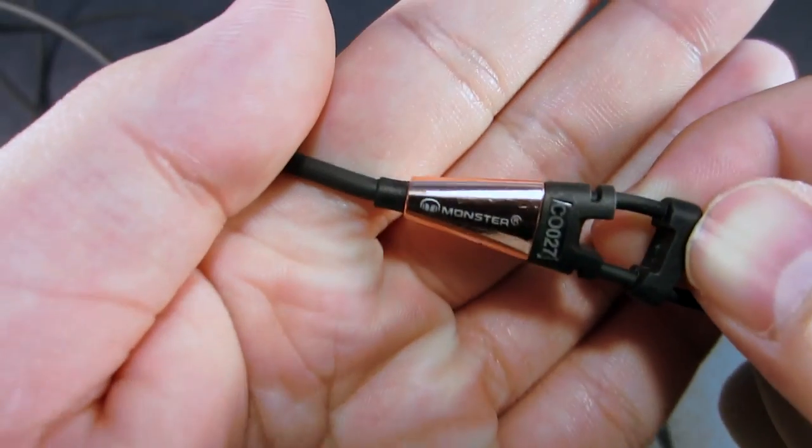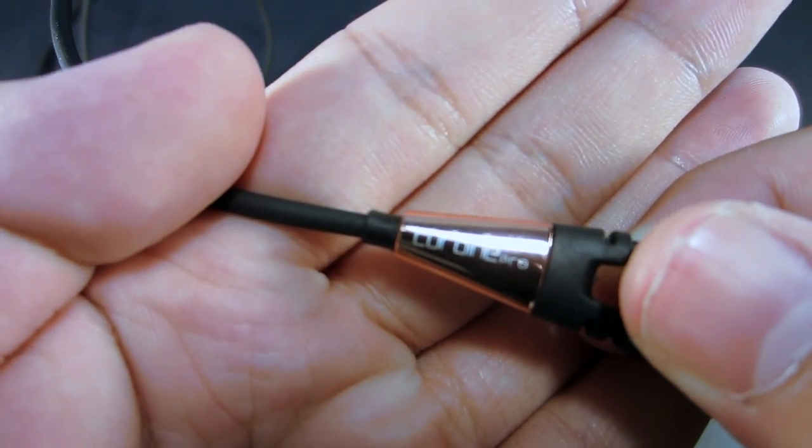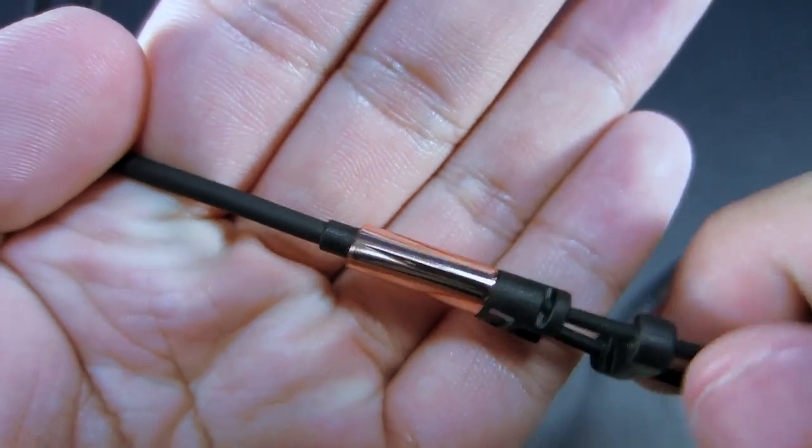Moving up to the middle, we have our cable yoke. As you can see on one side it says Monster and it says Turbine Pro on the other side. Here we have some cable management and overall the cable yoke is very lightweight.